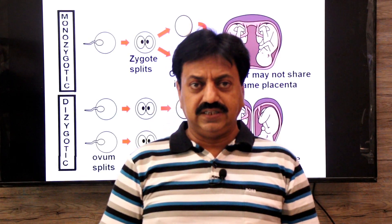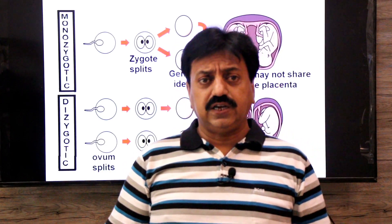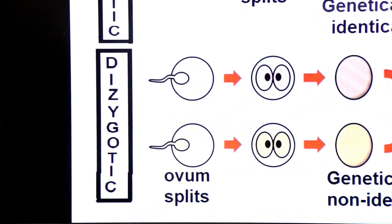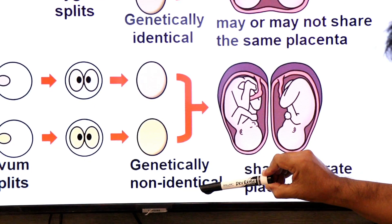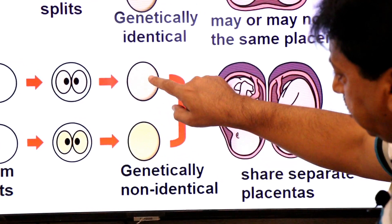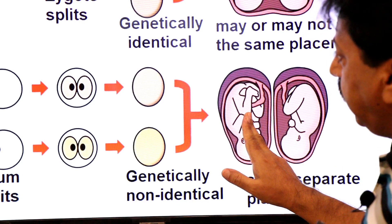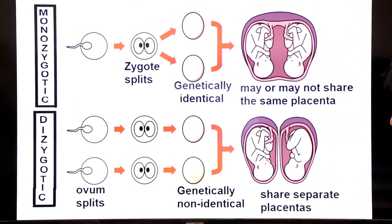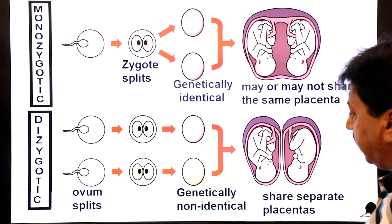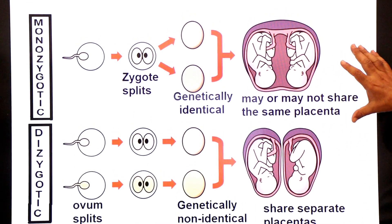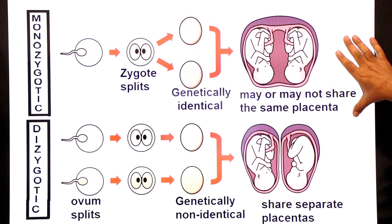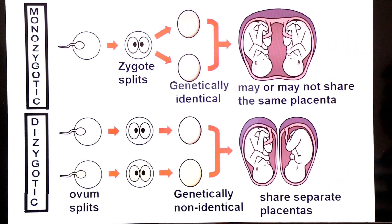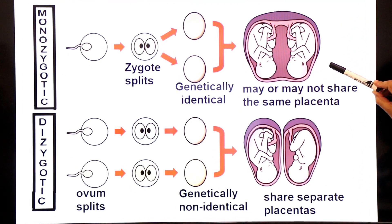There are also twins that are not clones of each other — they are called dizygotic twins. In dizygotic twins, two separate eggs are fertilized by two separate sperms. They are non-identical genetically because they do not share the same DNA — one twin shares the DNA of one zygote and the other twin shares the DNA of a different zygote. They are also called fraternal twins and they share separate placentas. So if asked which example represents natural clones in humans — monozygotic twins or dizygotic twins — the answer is monozygotic twins. Monozygotic twins is the example of natural cloning in human beings.